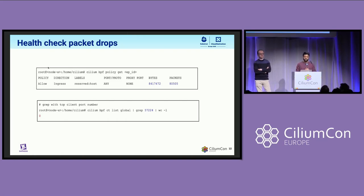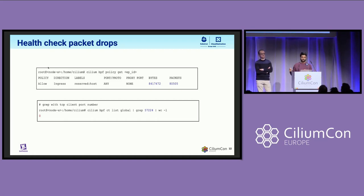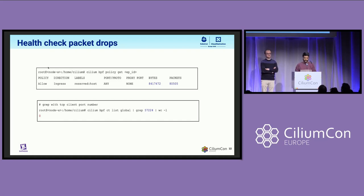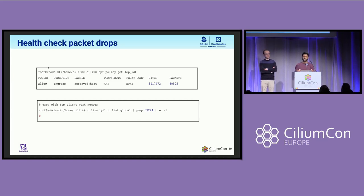A quick background on how this particular flow works. In order to allow traffic from Kubelet to endpoints on the same host, every endpoint has a default policy in place which allows packets to go from Kubelet to the endpoint itself so that pods can respond to health checks. Whenever Cilium sees this ingress connection, it also updates the connection tracking entry so that the response packet from the endpoint to Kubelet would automatically be allowed. It looks like in this case we were not seeing entries being updated in connection tracking.